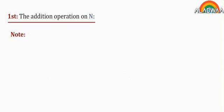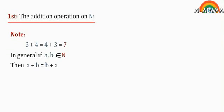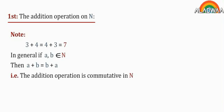Note: 3 plus 4 equals 4 plus 3 equals 7. In general, if a and b belong to N, then a plus b equals b plus a. That is to say, the addition operation is commutative in N.